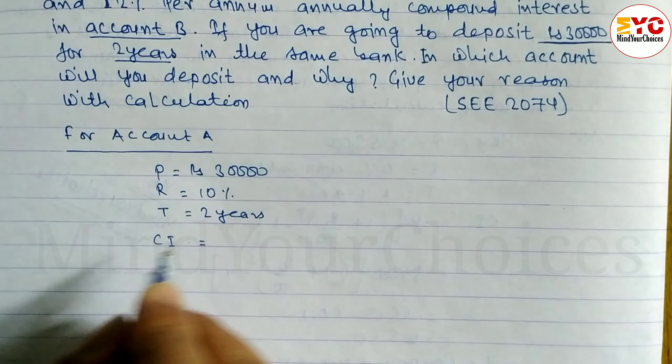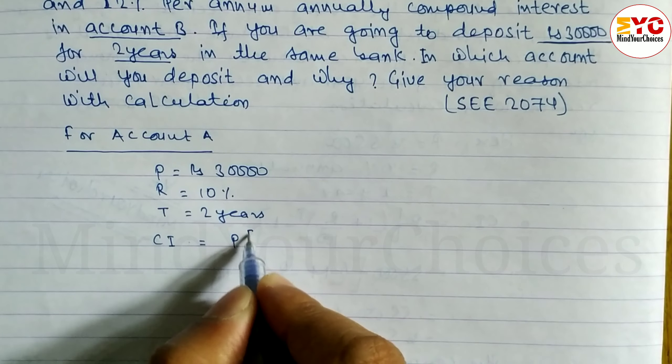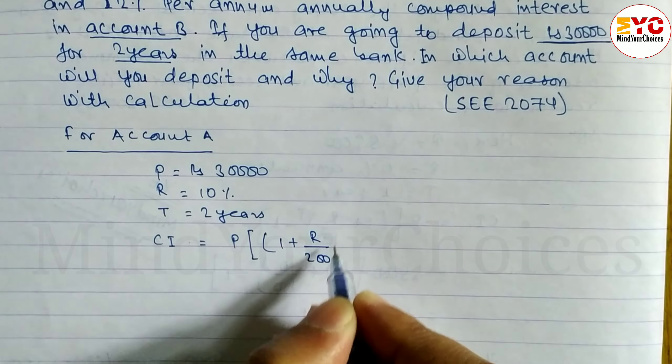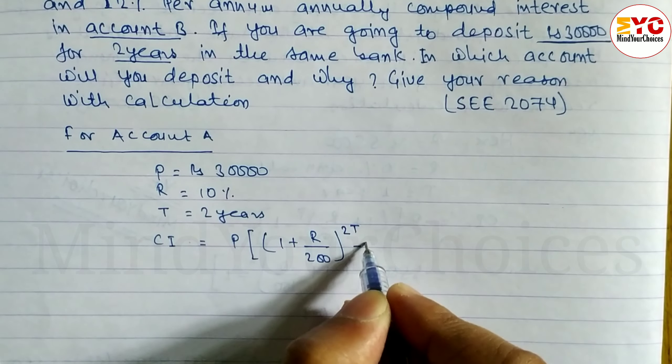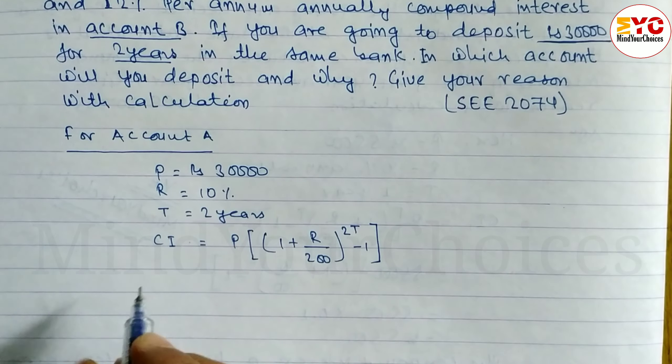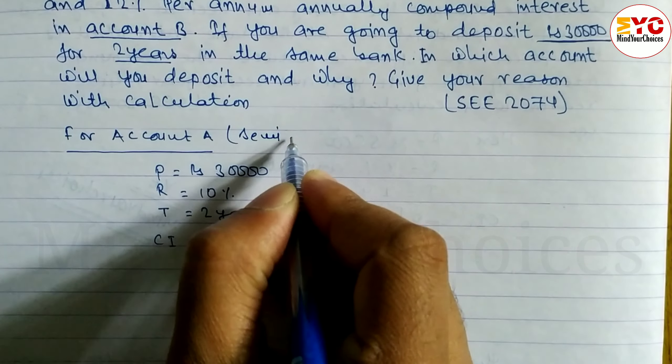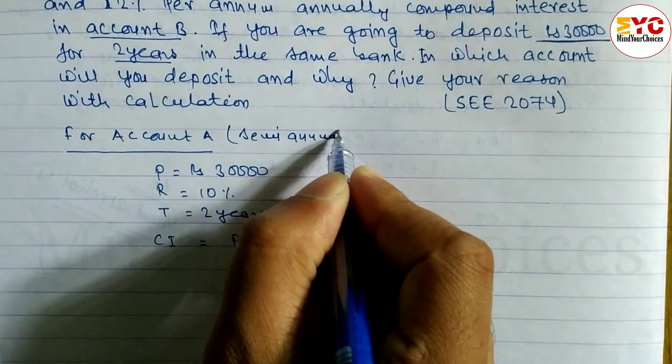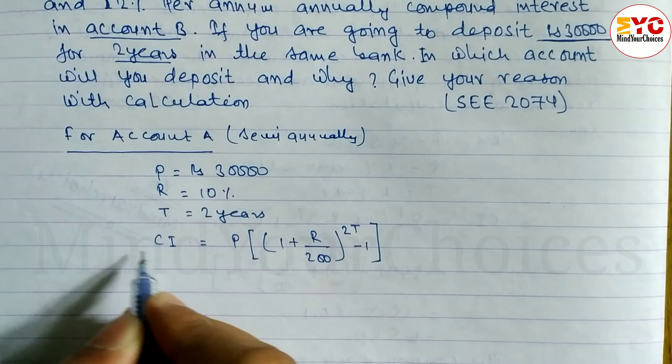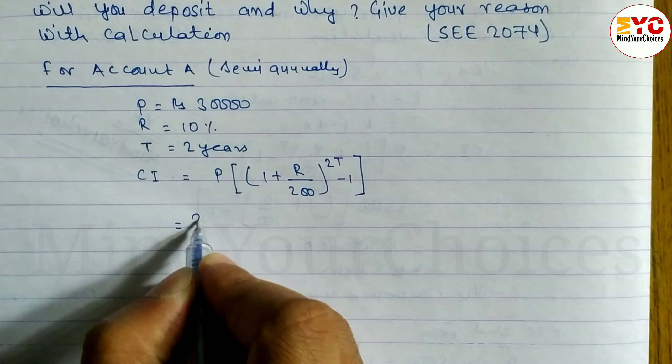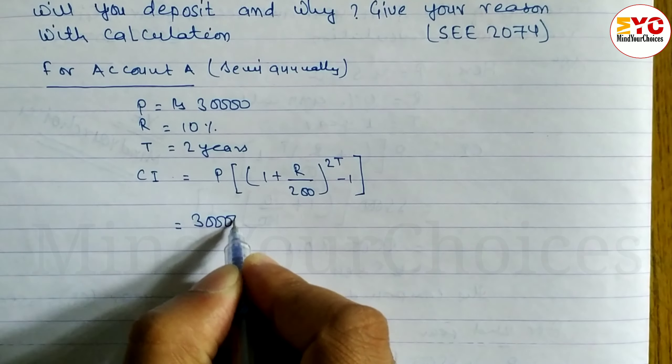Now what you have to do? Put the value and find out compound interest. So this is the formula, semi-annually compound interest: P times 1 plus R by 200 power 2T minus 1. This is the formula for semi-annually compound interest.